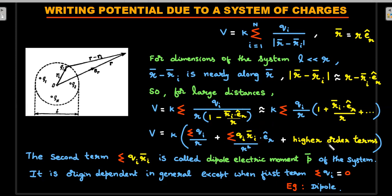I define that yellow-colored numerator — the summation Σqi r̄_i — as the dipole moment. There will be higher-order terms discussed in the next video. This second term Σqi r̄_i is a vector: it is the sum of each charge (scalar) multiplied by the position vector of that charge with respect to the chosen origin. This quantity depends not just on the charges but also on the choice of origin. This is called the electric dipole moment p̄ of the system. Dipole moment is defined even for a system where net charge is not zero — it is origin-dependent in general, except when Σqi equals zero.